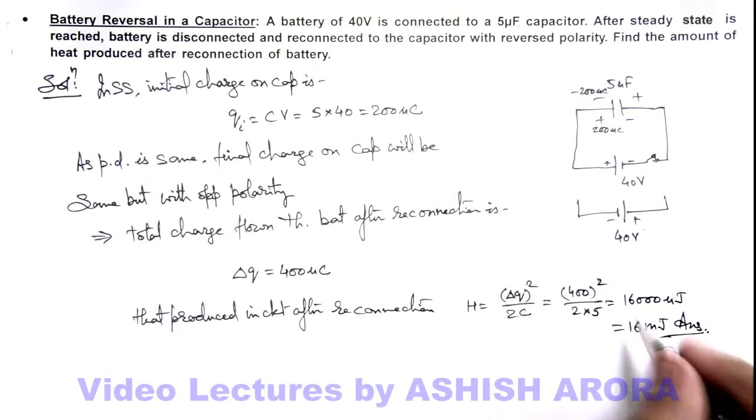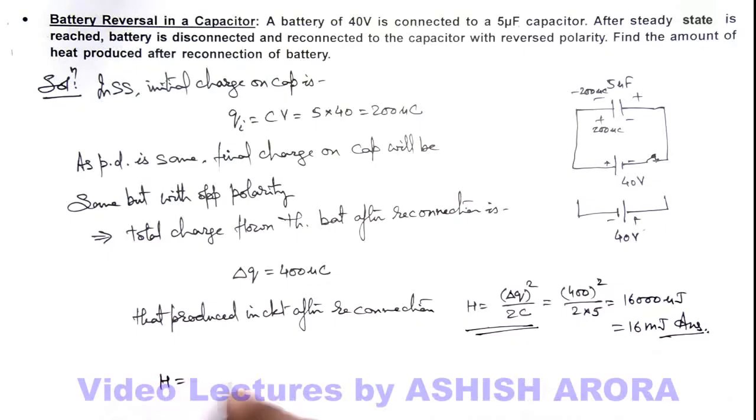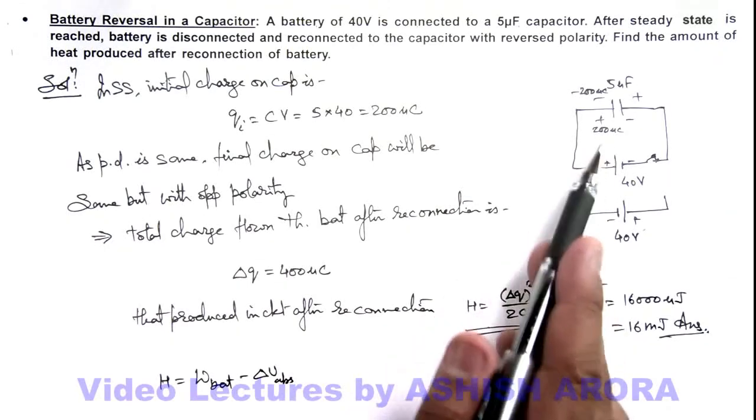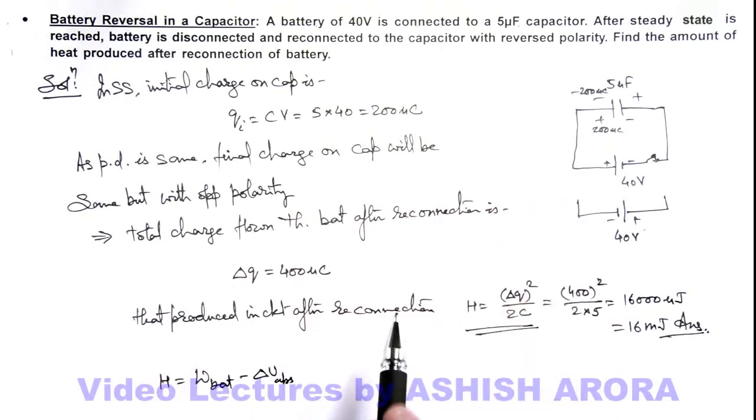We can also calculate this heat produced by calculation of work done by battery minus energy absorbed by capacitor. In this situation, no energy is absorbed by capacitor because its initial and final charge remain same.